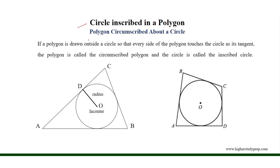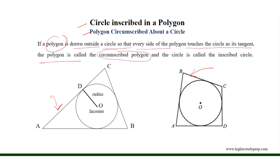Circle inscribed in a polygon, or polygon circumscribed about a circle. If a polygon — for example, a triangle or quadrilateral — is drawn outside a circle so that every side of the polygon touches the circle as its tangent, then the polygon is called a circumscribed polygon and the circle is called an inscribed circle.